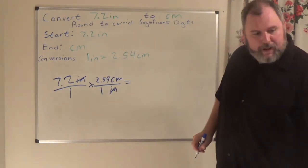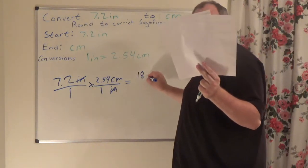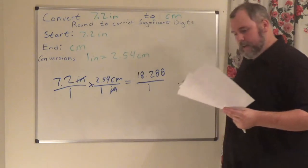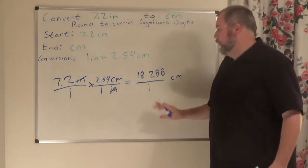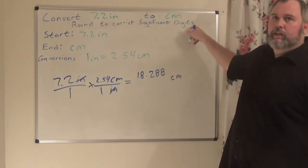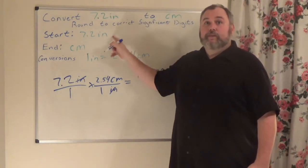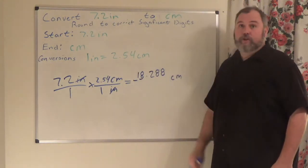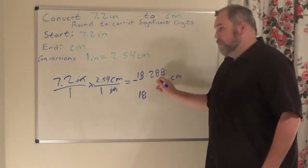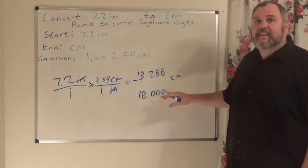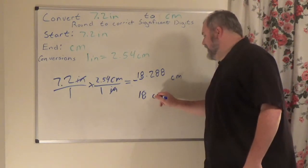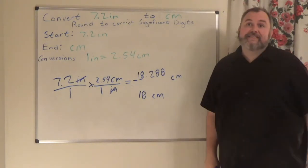Multiplying across the top gives 18.288 over 1, all in centimeters. Now, same principle: significant digits. I started with 7.2, which has two significant digits. So I go one, two: the 2 tells the 8 to stay the same, giving 18. All remaining numbers become zeros and those trailing zeros get dropped. So 7.2 inches is 18 centimeters.